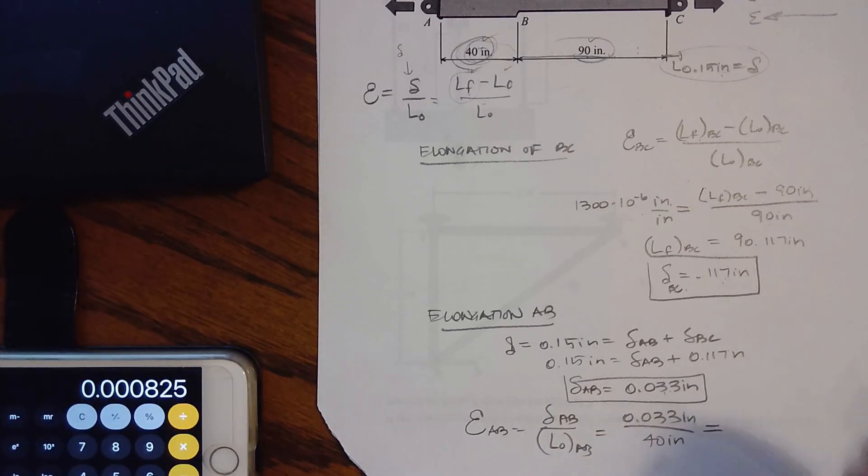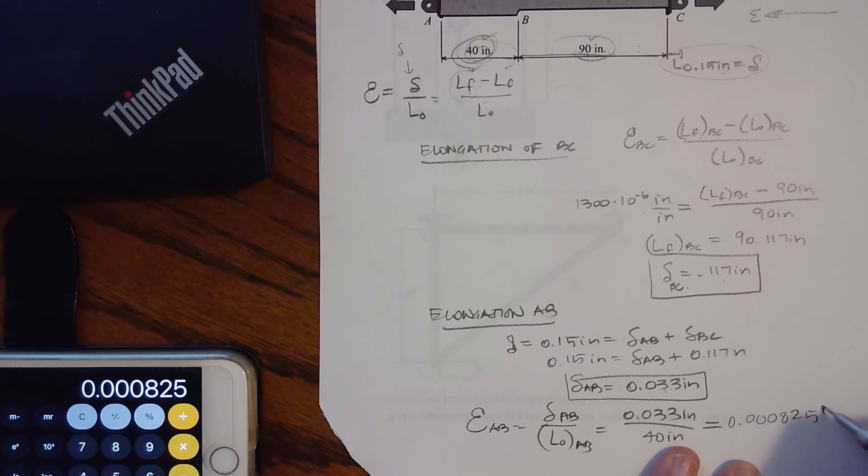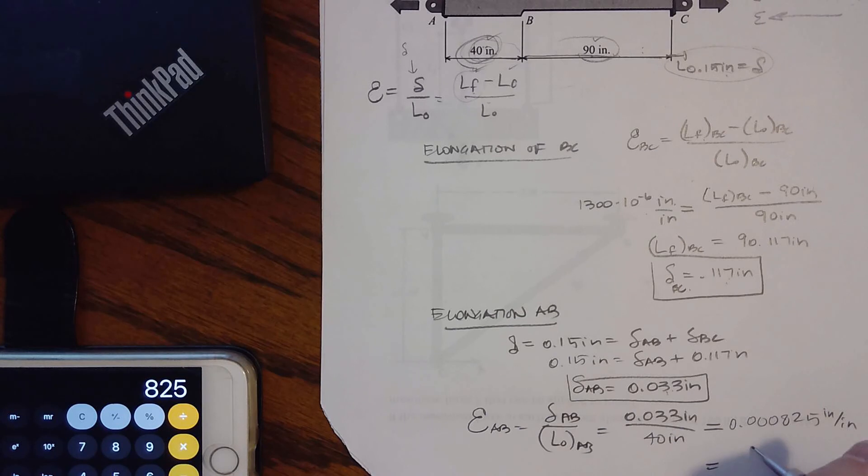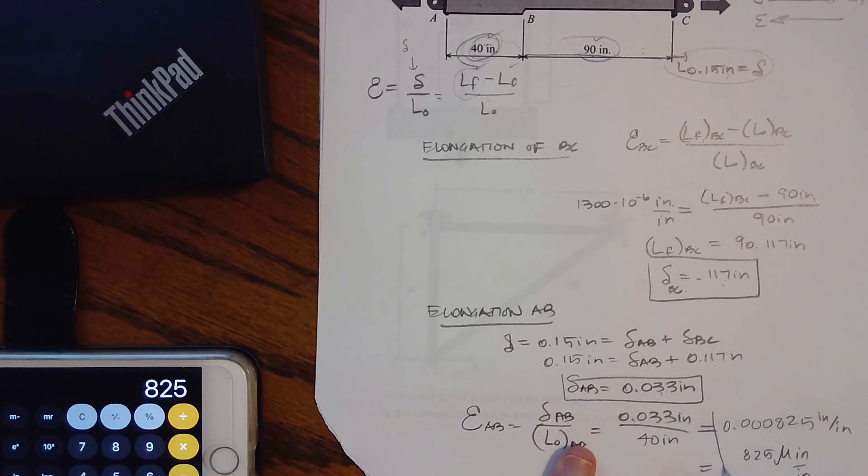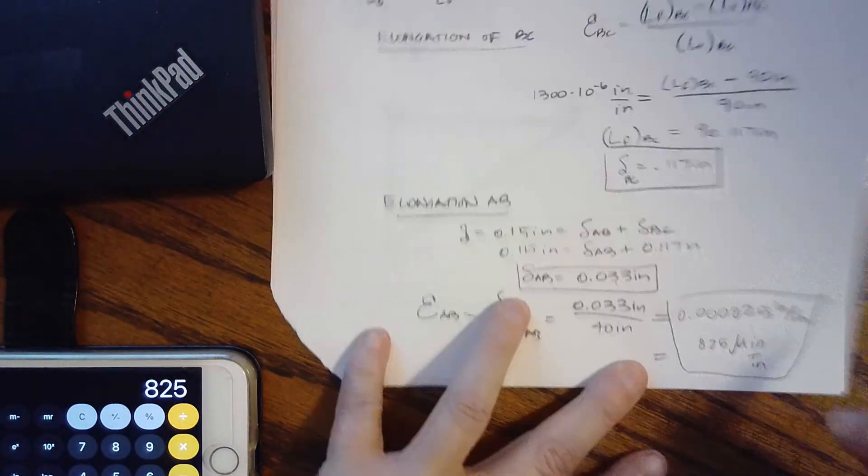And I get 0.000825 inch per inch. Well, again, that is a super tiny number, so I can multiply that by 1, 2, 3, 4, 5, 6, and I get 825 micro strains. So it's just 10 to the negative 6. So there is our answer depending on the units that we are wanting. Easy as that, that's all we're doing.